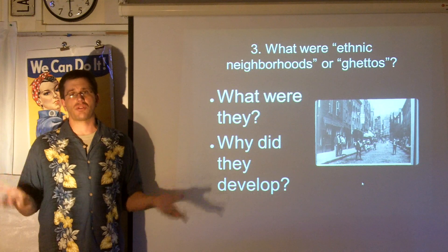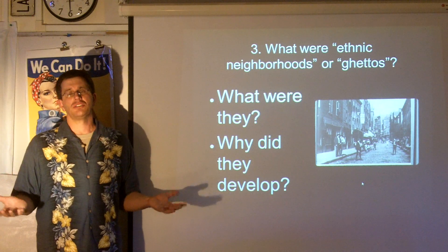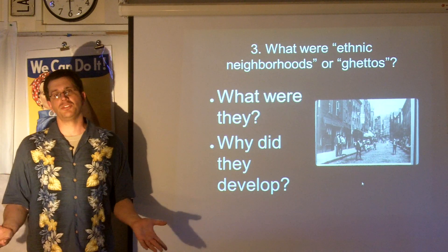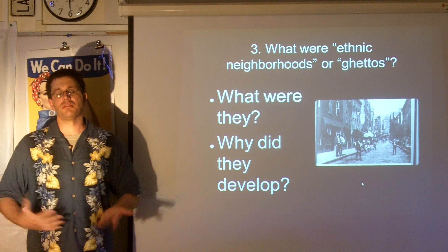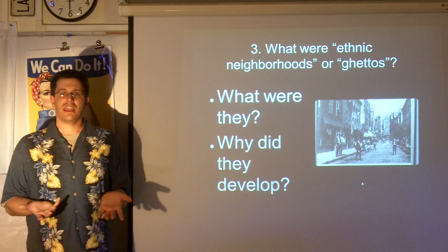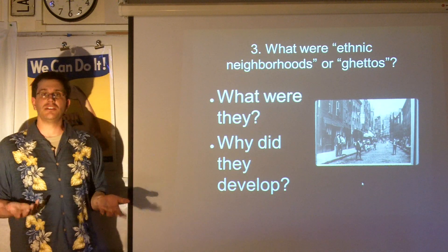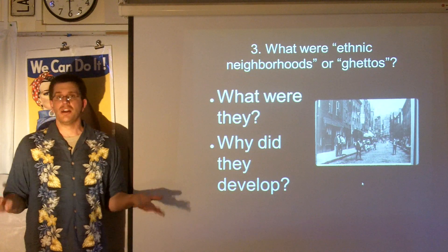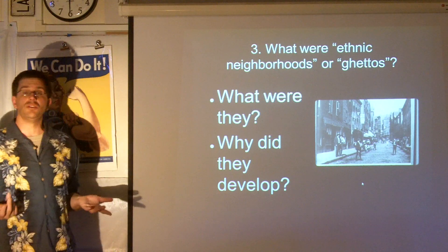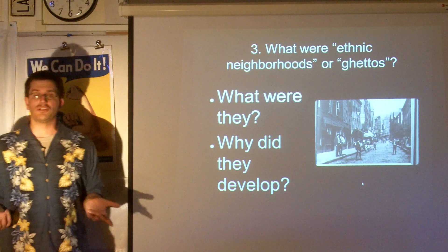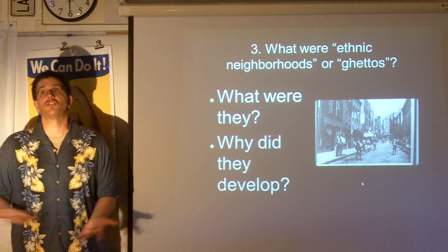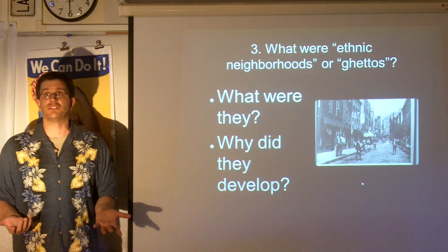They are dense, crowded collections of tenements — poor apartments that new immigrants lived in when they arrived in New York. In the late 1800s, about 1900, 90% of people living in New York were first or second generation Americans — immigrants or the children of immigrants.